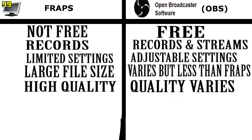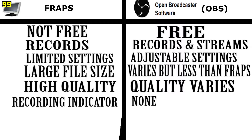FRAPS will always give you good quality video, whereas with OBS the quality varies based on your settings, and you'll have to play with those settings to try and get something near to the quality of FRAPS. FRAPS also has a recording indicator — it's the FPS counter that lights up red when you're recording, so you'll know exactly when you're recording and when you're not. OBS doesn't have anything similar, so you have to really make sure you judge when you turned recording on and off.